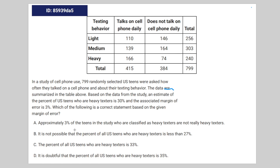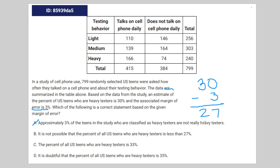Answer A says approximately 3% of teens — this is confusing the margin of error for the actual percentage, so that's just wrong. Answer B says it is not possible that the percent of all U.S. teens who are heavy texters is less than 27%. With a margin of error of 3%, you can give or take 3% from the original 30%. Taking away 3% gives exactly 27%, so B cannot be the correct answer.